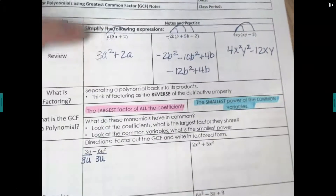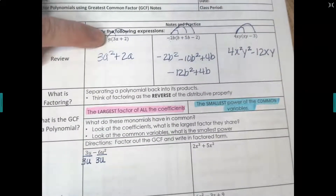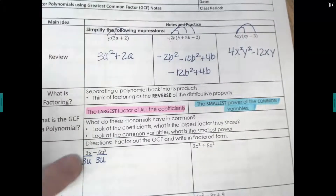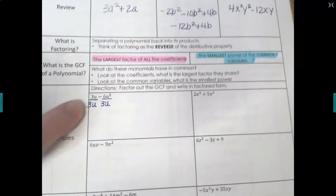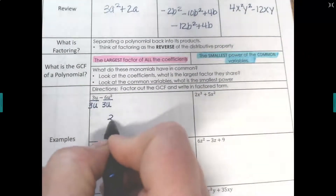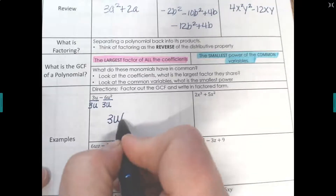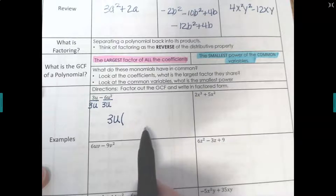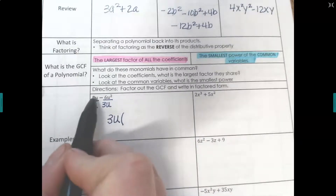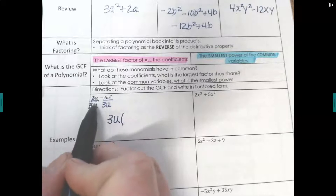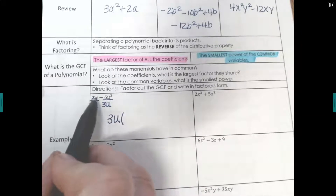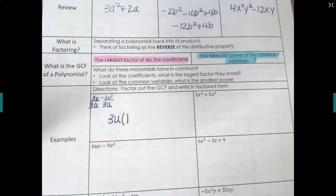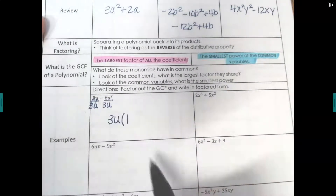We put the GCF out front with a parenthesis, just like the 'a' was in front before when we distributed. Inside the parenthesis we write what's left after division: 3u divided by 3u is 1. Then negative 6 divided by 3 is negative 2, and u squared divided by u leaves a single u — subtracting exponents gives 2 minus 1 equals 1.